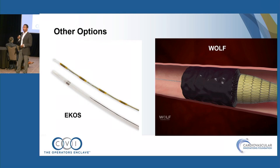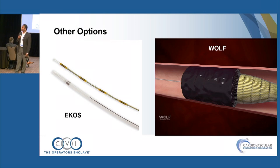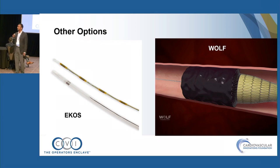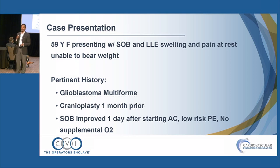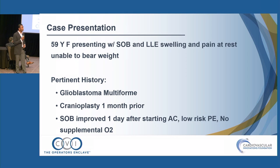Another option as a bailout is ECOS — when clot can't be fully debulked, it serves as a thrombolysis option. Another upcoming system is the Wolf system, which works like a caterpillar engulfing the clot and removing it in a semi-desiccated manner. The first case: a 59-year-old with shortness of breath, lower extremity swelling and pain at rest, unable to bear weight — severely symptomatic. Adding complexity, the patient had recent craniotomy about a month prior, a low-risk PE with low PESI score, and a hugely symptomatic DVT.